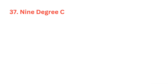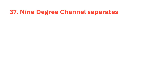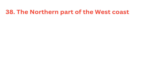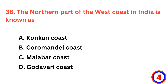Nine degree channel separates? The correct answer is option B, Lakshadweep and Minicoy. The northern part of the west coast in India is known as? The correct answer is option A, Konkan coast.